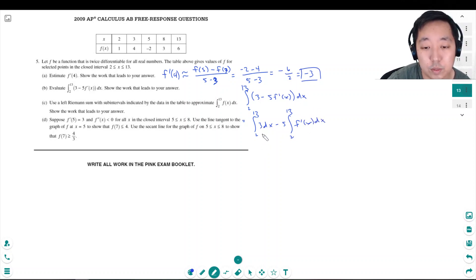By fundamental theorem of calculus, this one's easy. This is 3 times x times 11, or 3 times x. So this is 33 minus 5 times f of 13 minus f of 2. f of 13 is 6, f of 2 is 1. This is 33 minus 5 times 5. 33 minus 25, and that's equal to 8.